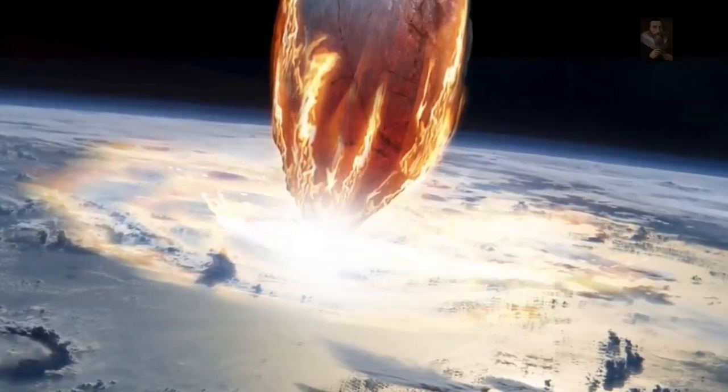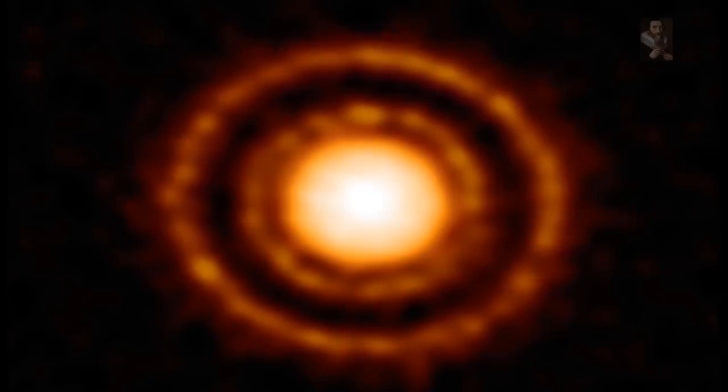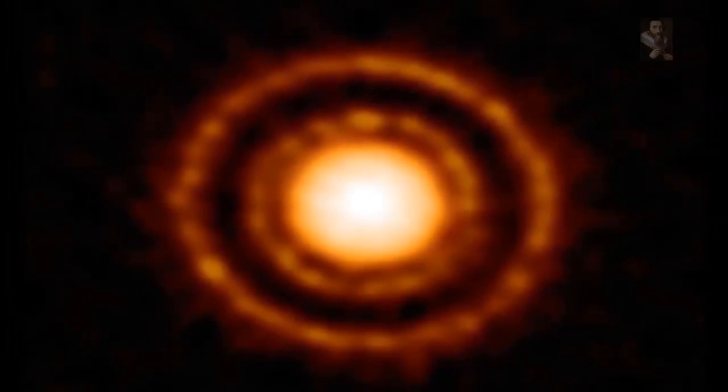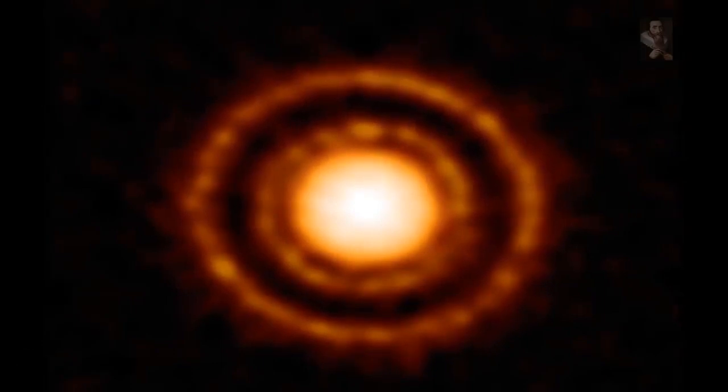If Shoemaker-Levy 9 had missed Jupiter and hit Earth back in the 90s, we wouldn't be here. The current research being carried out regarding the rings suggests that similar rings were likely to have existed around the sun as the planets were forming.